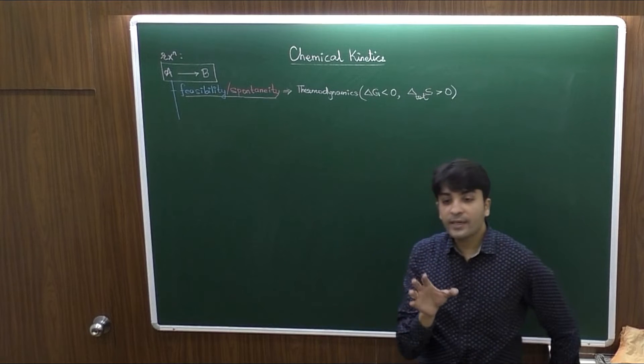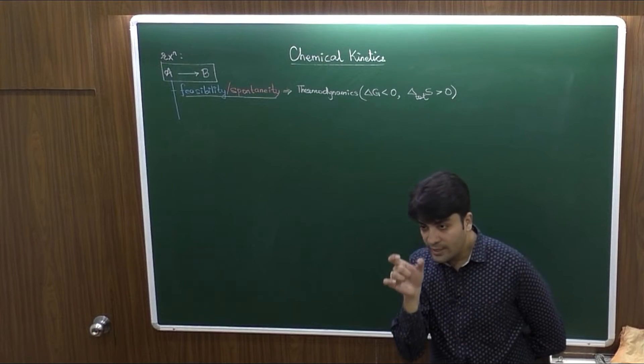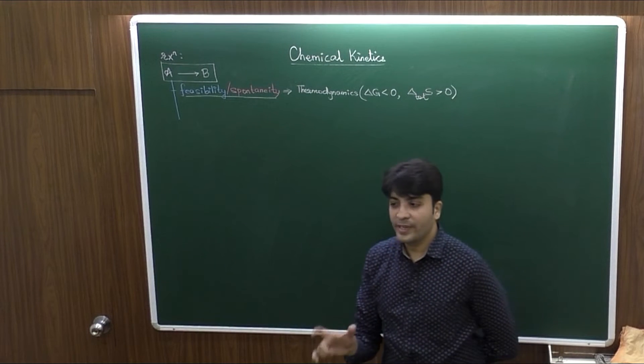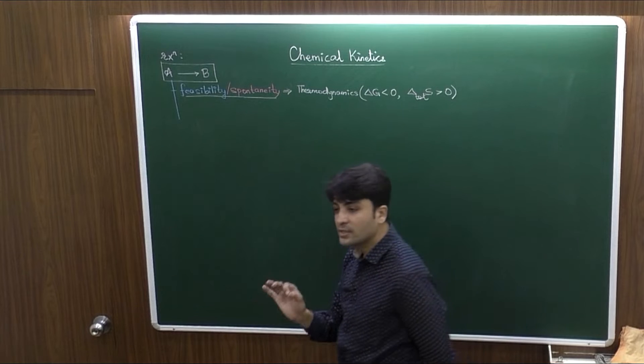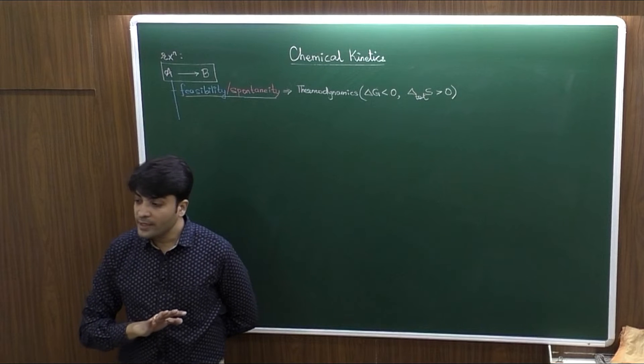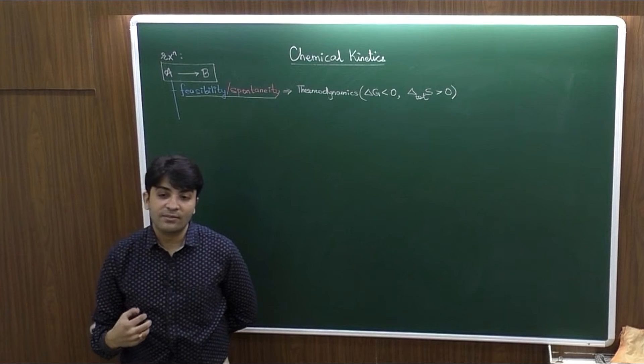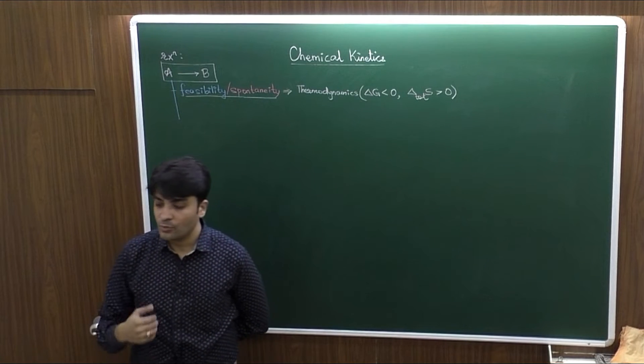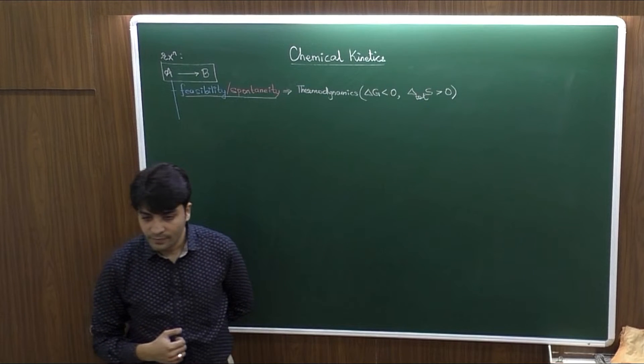Meaning, given a chemical reaction, we can calculate delta G. If it comes out to be negative, I can say this reaction is feasible. If it comes out to be positive, it will not be feasible, meaning the reactant will not spontaneously convert into the products.